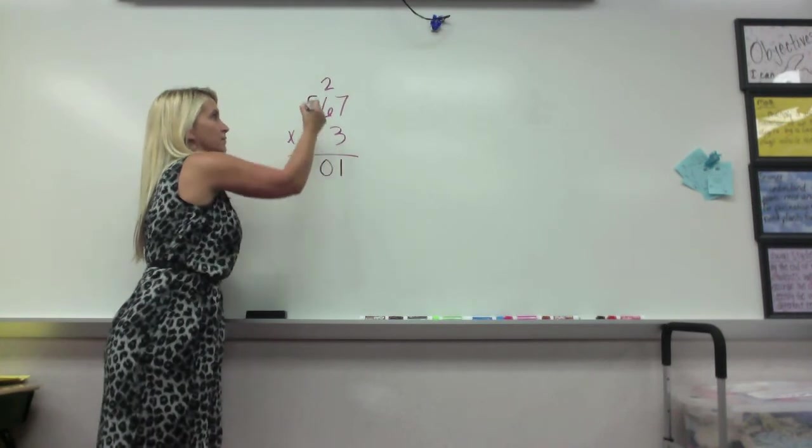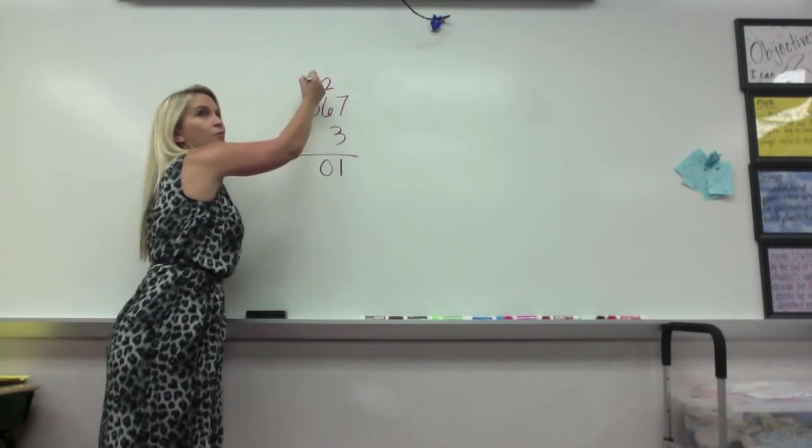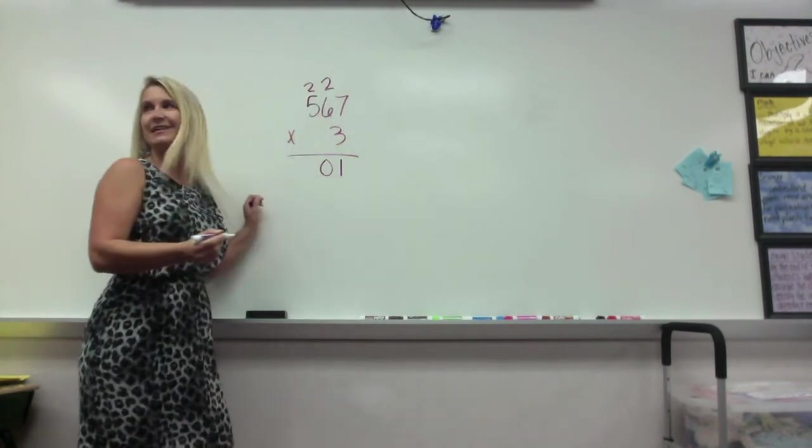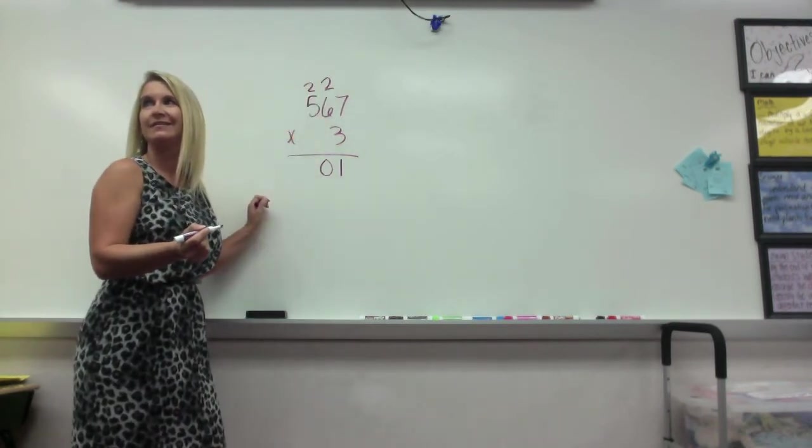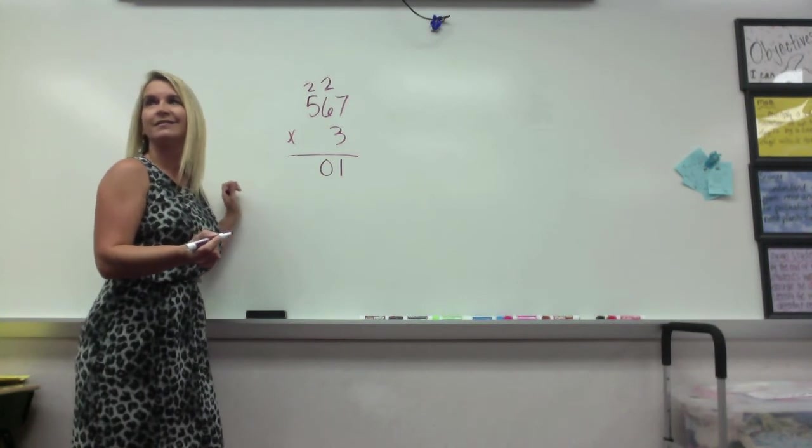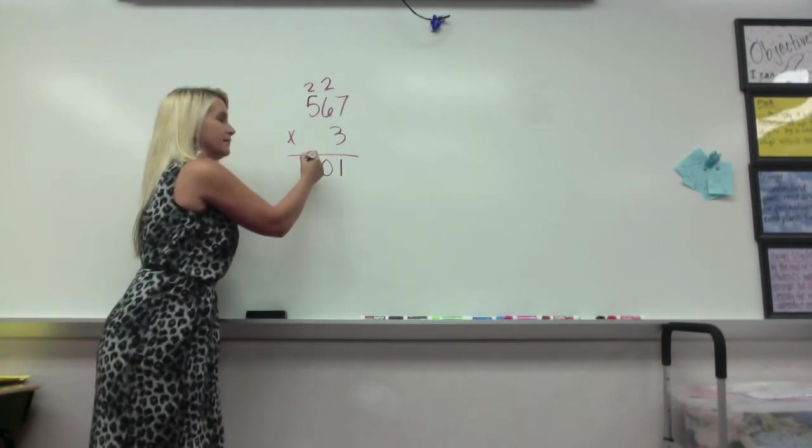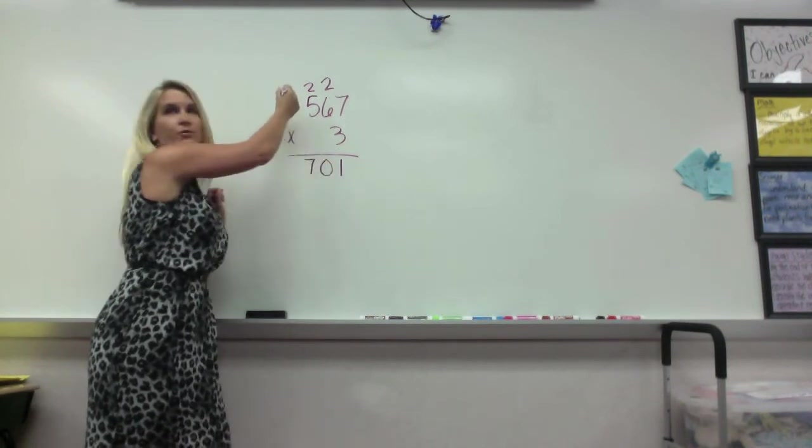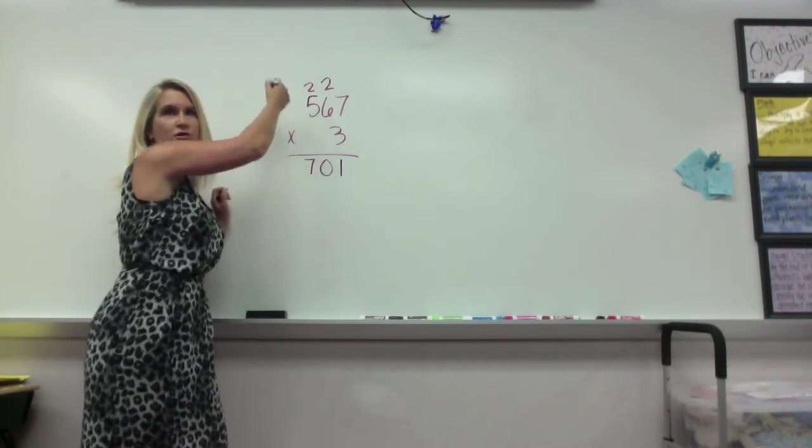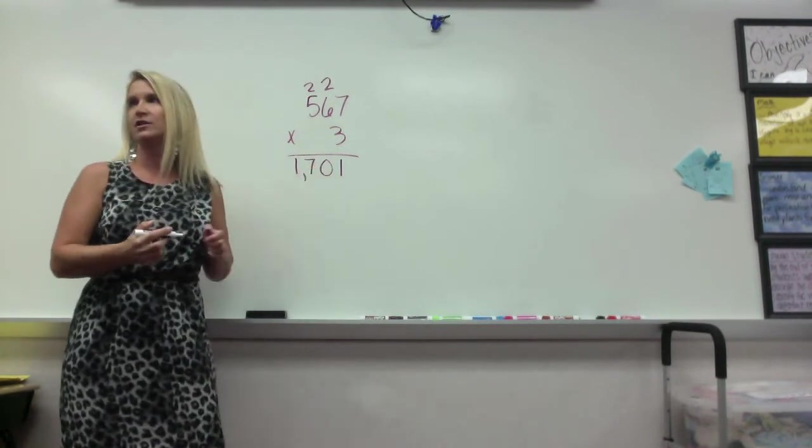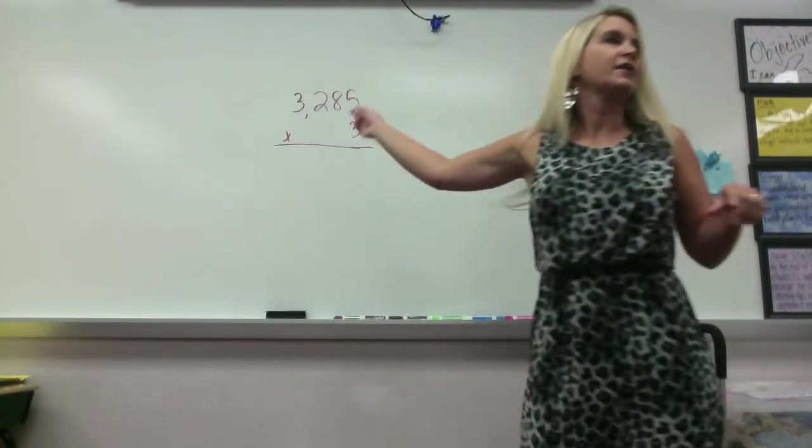The 0, and then we regroup it on top of the 5. Then I did 5 times 2, which is 10 plus 2, 12. And I put the 2 here. Do I need to regroup the 1? No, because ultimately it's just going to come back down as a 1, isn't it? How many of you got 1701? All right.